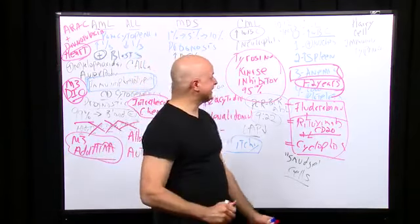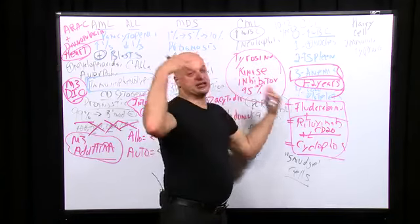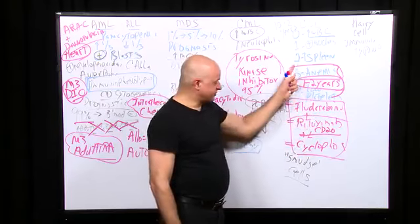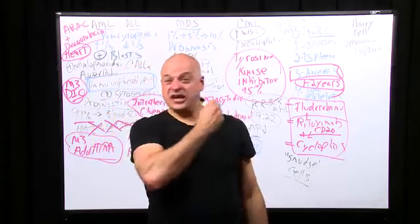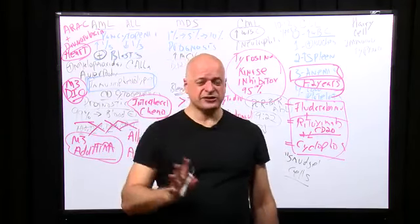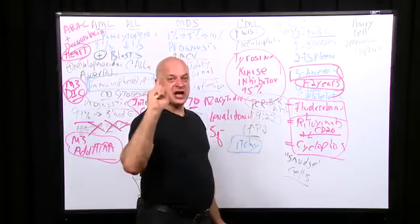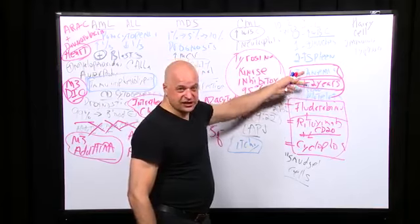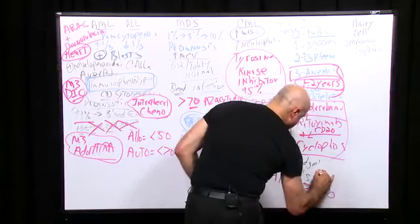Advanced stage disease needs therapy. Chlorambucil is just for old guys to bring the white count down — it does not increase survival. Chlorambucil can be used in patients too old and fragile for cyclophosphamide and fludarabine, but it does not lower mortality. Don't forget to treat advanced stage disease. Alemtuzumab — anti-CD52 — is a treatment option for advanced CLL.